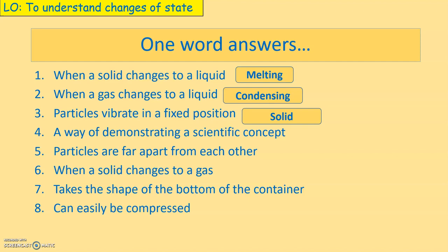Number four: a way of demonstrating a scientific experiment is called modeling. Remember we showed some examples of modeling using 2D and 3D structures. So it's called modeling.